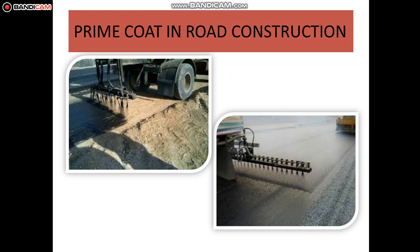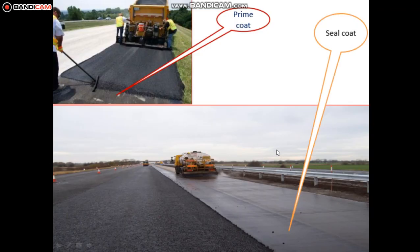Prime coat is an application of low-viscosity liquid bituminous materials over an existing porous or absorbent pavement surface like WBM. Its prime objective is to plug the capillary voids of the porous surface, to bond the loose materials on the existing surface, and to bond the granular base on which the binder layer is placed. It provides bonding between two layers. Seal coat is provided at the topmost layer to prevent entry of rainwater, provide a smooth surface for vehicle movement, and reduce skidding.